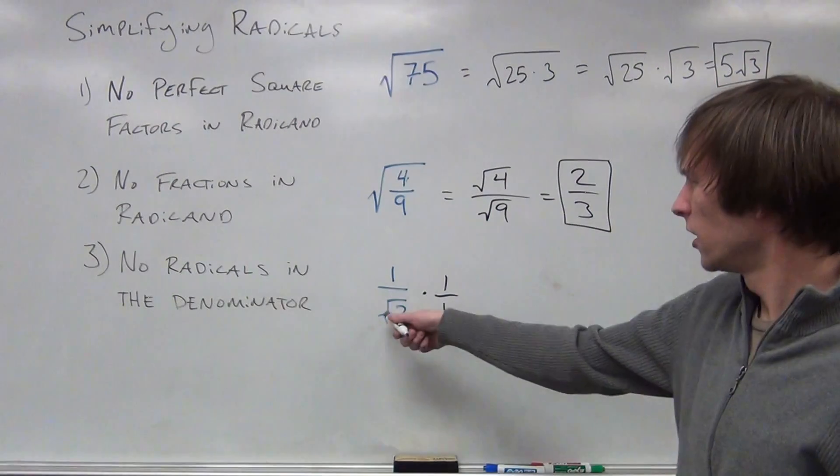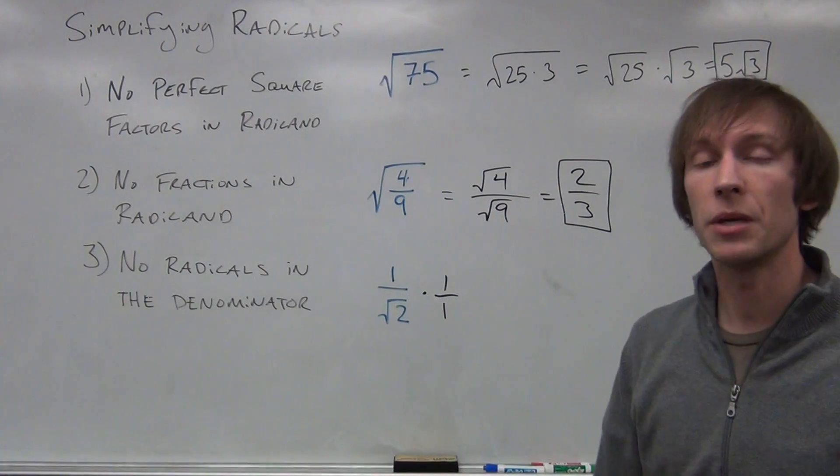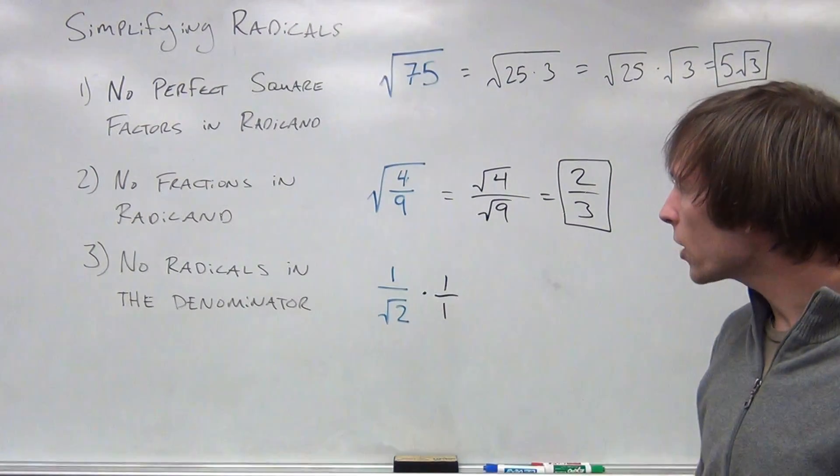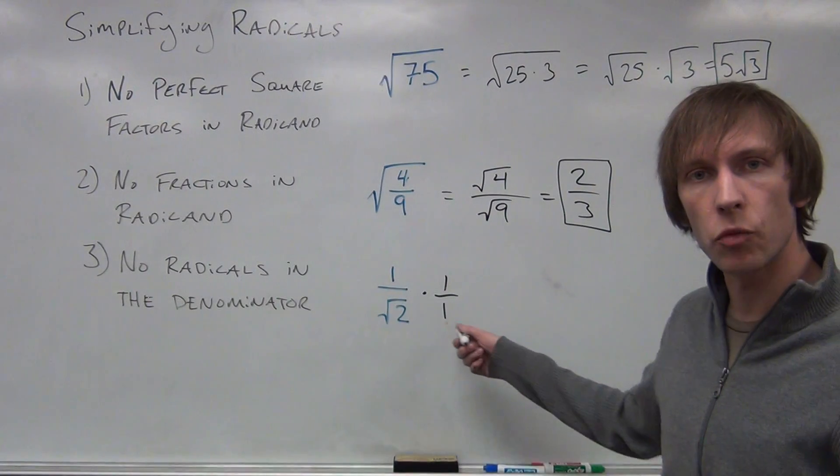That still gives me the same thing. 1 times 1 is 1, radical 2 times 1 is radical 2. I didn't change it at all. Okay, so let me think of something else. How can I multiply the square root of 2 to get a rational number?